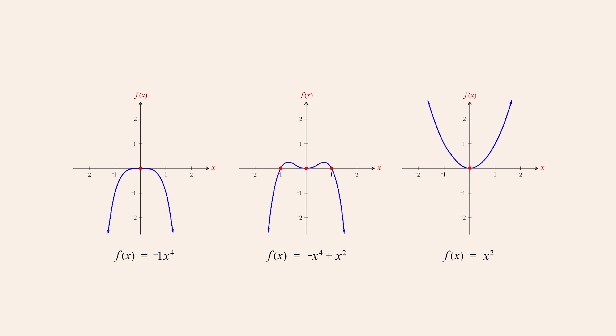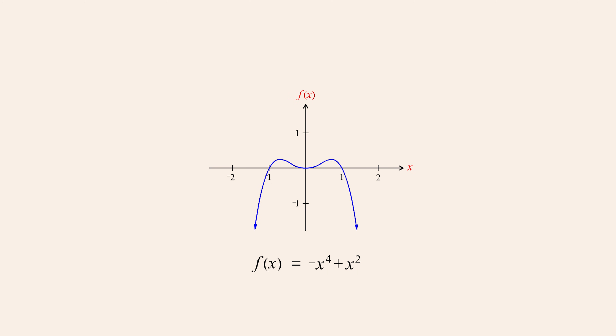Taking a closer look at the graph of this polynomial function, we see that the function has positive values for x greater than zero and less than one, and for x less than zero and greater than negative one. This is because for x-values in this range, the magnitude of x-squared is greater than the magnitude of negative x to the fourth power. For example, when x is one-half, negative x to the fourth power is negative one-sixteenth and x-squared is one-fourth.